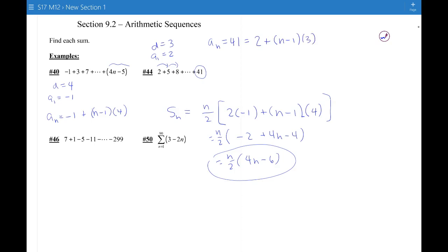So do you see how the thing that you don't know is the n, but you have an equation that only has n in it, so you can solve for n. So you get 41 equals 2 plus 3n minus 3. So 41 equals 3n minus 1.